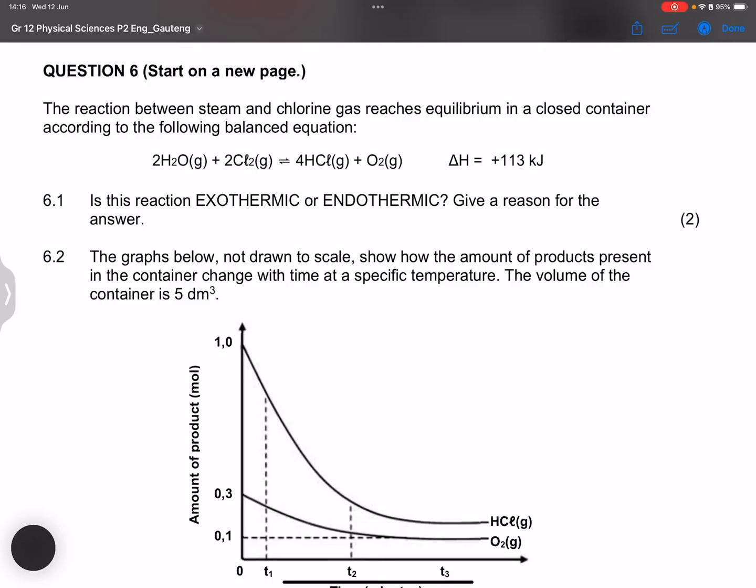Question six we go. They say the reaction between steam and chlorine gas reaches equilibrium in a closed container according to the following balanced equation. So there's our balanced equation and we note there that delta H is greater than zero. It is positive.